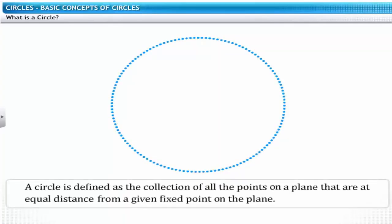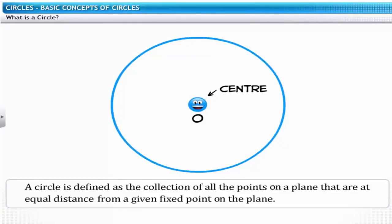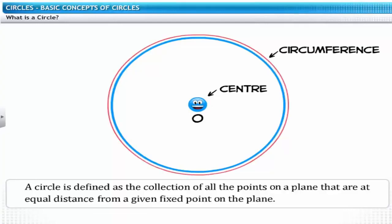Using this depiction, we define a circle as a collection of all the points on a plane that are at an equal distance from a given fixed point on the plane. Here, the fixed point is point O and it is called the center of the circle. The length of the edge of the circle traced around the center is called the circumference of the circle.